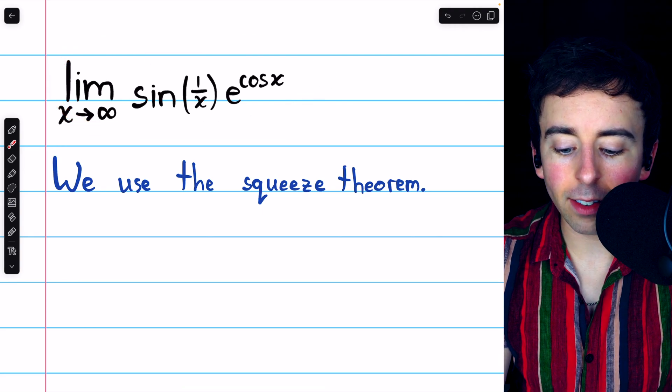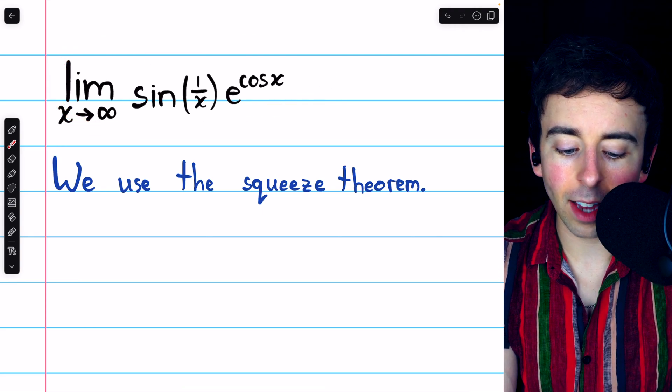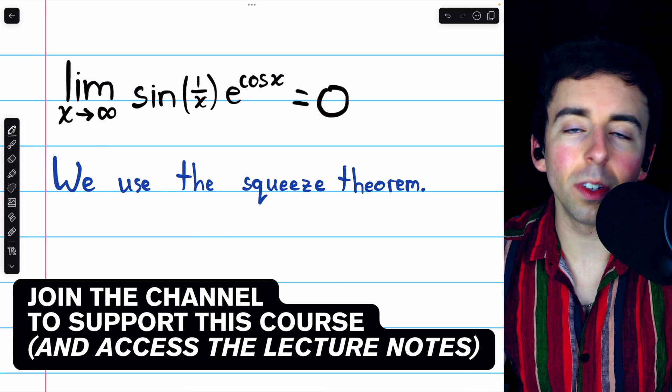The limit of sine of 1 over x times e to the cosine x, as x goes to infinity, is equal to zero.